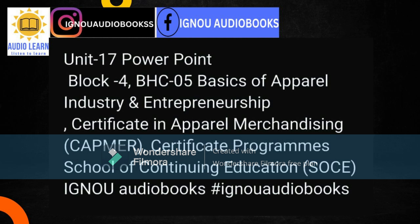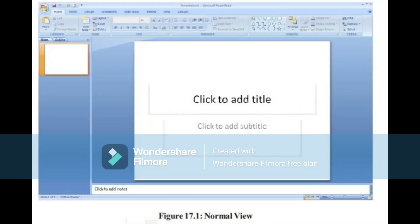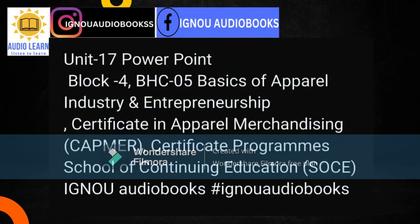There are three main areas in the normal view. A. Slide Pane: this is the big area in the middle where the slide is made, containing boxes with dotted lines called placeholders. Placeholders contain text items or non-text items like pictures, charts, etc. B. Slides Tab: on the left is the area with thumbnail versions of all slides, and the currently edited slide is highlighted. C. Notes Pane: at the bottom is the notes pane where notes needed during the presentation are written.